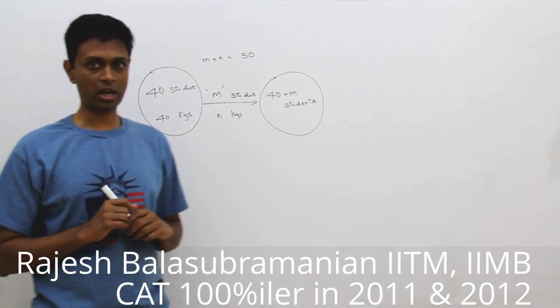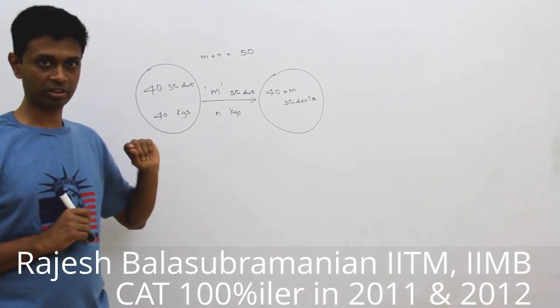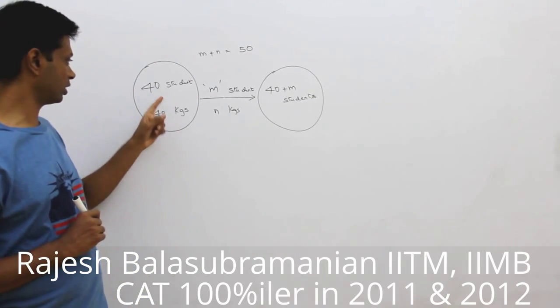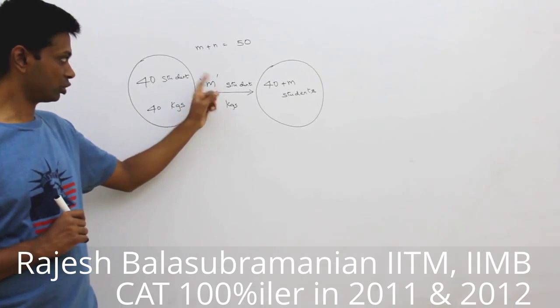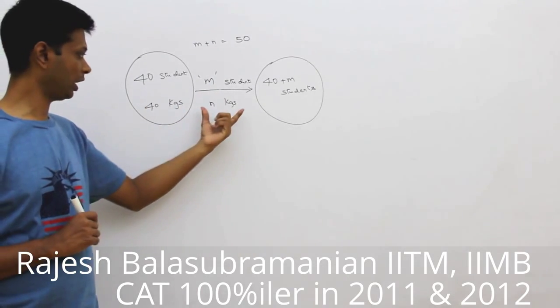This is a very interesting question. We are going to start with the data we have been presented. There are 40 students in this class, each weighing 40 kilograms. m students join this class, each weighing n kilograms.